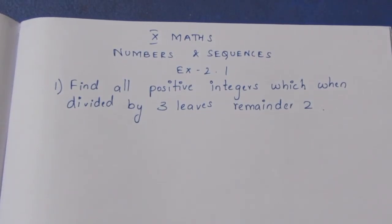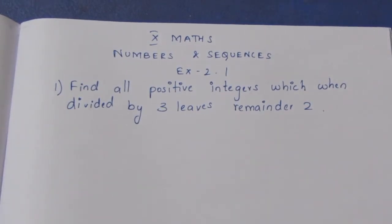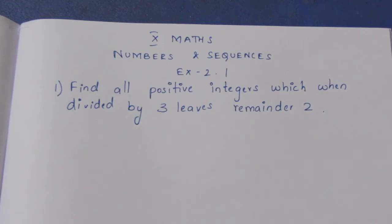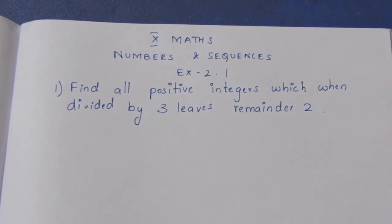Hello viewers, I am Aikli. In the 10th Maths Numbers and Sequences exercise 2.1, first sum — find all positive integers which when divided by 3 leave a remainder 2.